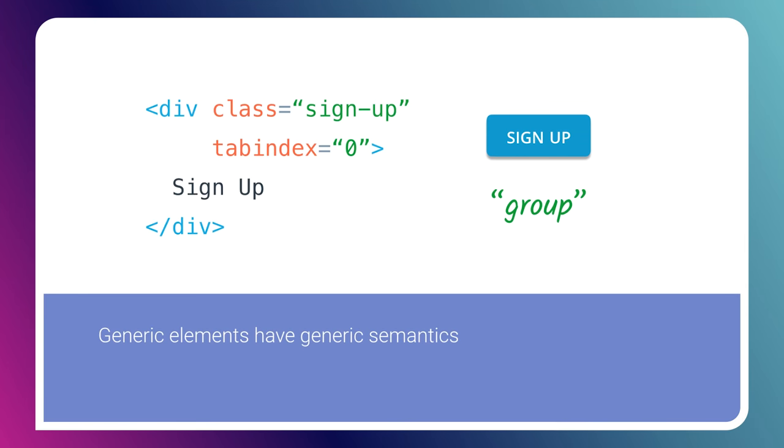But not all elements have super useful semantics. For instance, if you have a div that you're trying to turn into a button — a div, semantically, is just a generic grouping element. There's nothing about it that says it's interactive, and so when a screen reader lands on that element, it's just going to say it's a group. It's not going to tell somebody that it's a button. And so when people talk about semantics and why they're so important for accessibility, this is really why — because the semantics let us express the affordances that elements offer, and that instructs a screen reader how to announce it to the user.